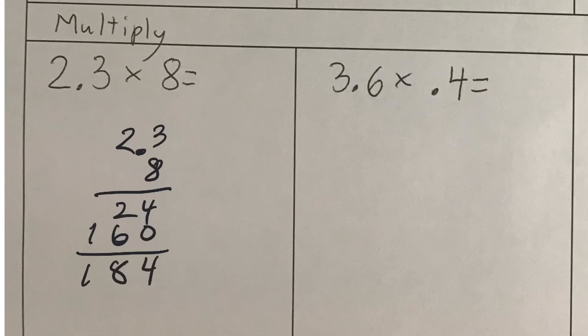I'm ignoring the decimal for a moment. But now, it's time to look at this decimal. We have one decimal. How many numbers are to the right of the decimal point? 1. So, from the right side, I move in 1. Put my decimal there. And the answer is 18 and 4 tenths. If you think about it, that should be right. Because 2 times 8 is about 16. So, it's going to be a little bit more than 16.